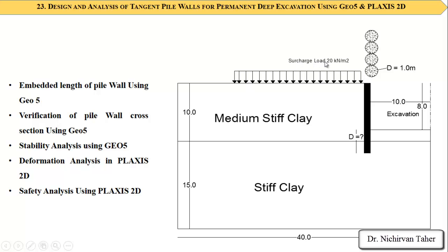The excavation depth will be 8 meters, and we also have a nearby high surcharge load of 20 kilonewtons per square meter. The diameter of the bored pile is assumed to be 1 meter. First, we will estimate and calculate the embedded length or penetration depth of the pile wall using GEO5, then verify the pile wall cross-section using the same software, and perform a stability analysis to find the safety factor, comparing results between the two softwares.